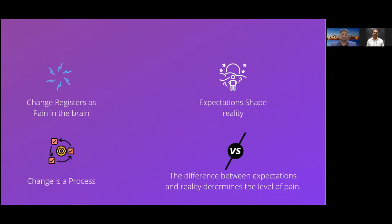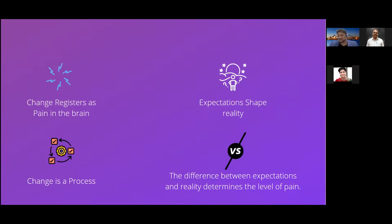You can do tools till you're blue in the face, but if you don't understand that you are dealing with human beings, you will not succeed. Step back: change registers as pain in the brain; expectations shape your reality; change is a process — go with the flow. The fourth principle: the difference between your expectations and your reality determines the level of pain. If you promise ten and give nine, acceptance is higher. If you promise ten and give six, pain increases.